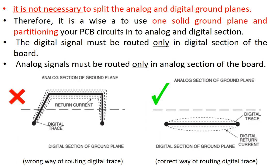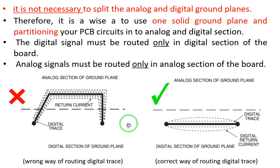It is important to note it is not necessary to split the analog and digital ground planes. Therefore it is wise to use one solid ground plane and partition the PCB into analog and digital sections. The digital signal must be routed only in the digital section of the board. If you route a digital trace into the analog section, the return currents will flow from there through the analog ground.